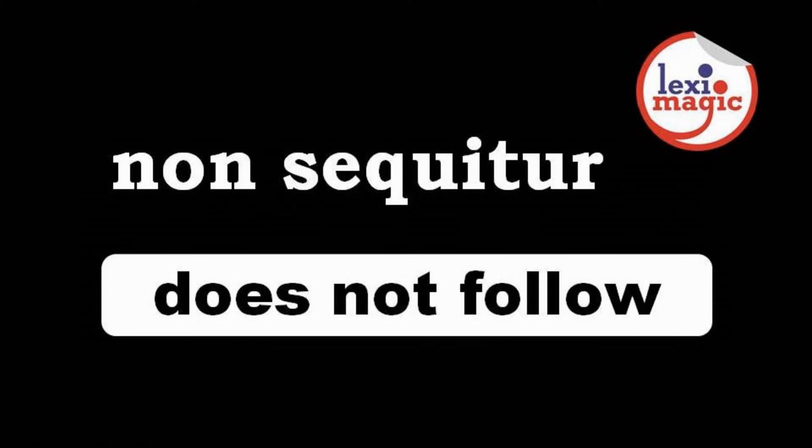Non sequitur translates to 'it does not follow.' It is used as a literary device and is opposed to a cliché. Non sequitur is also a kind of logical fallacy. For example: all fish live in water; frogs live in water; therefore, concluding that all frogs are fish is a logical fallacy classified as a non sequitur.